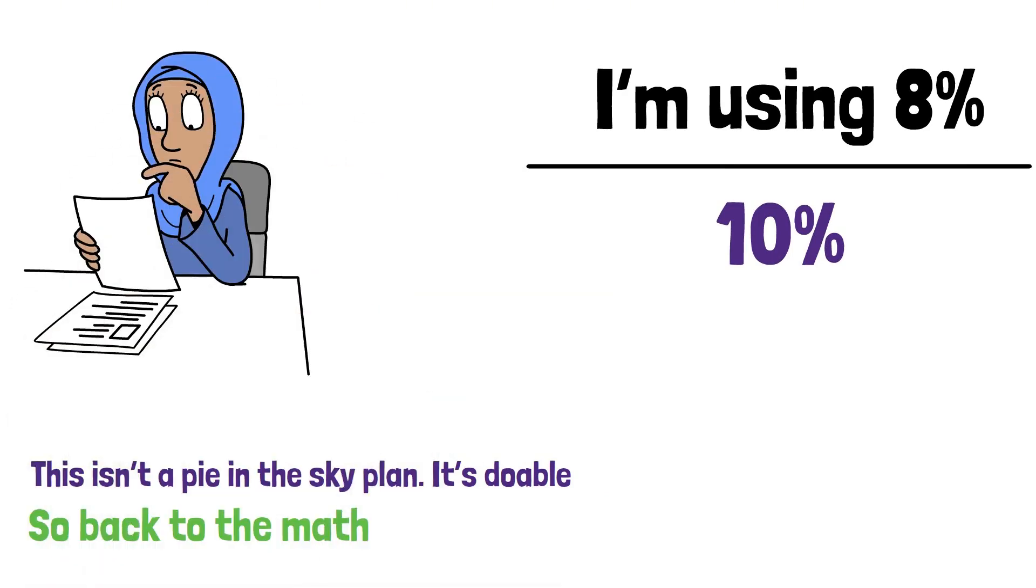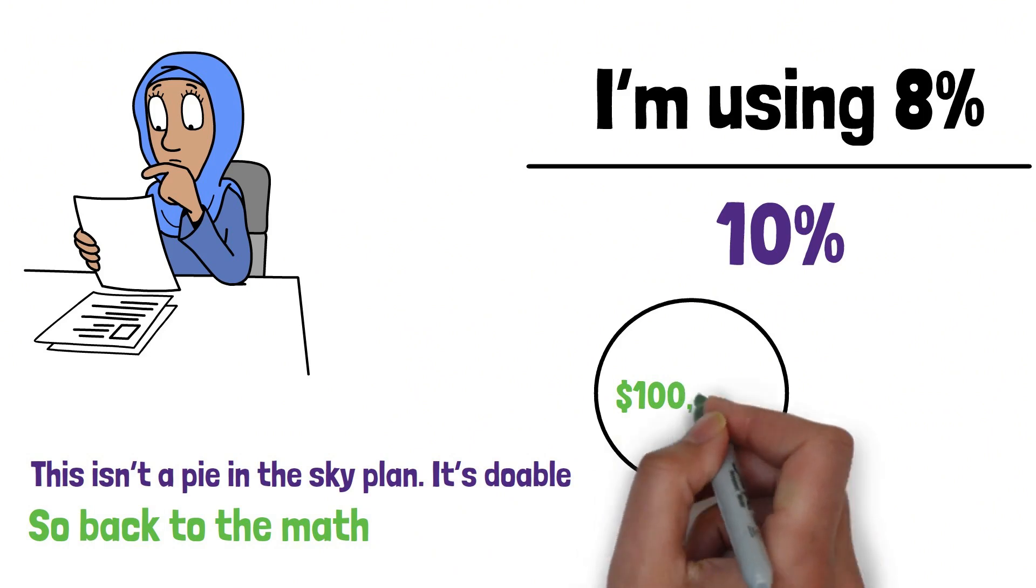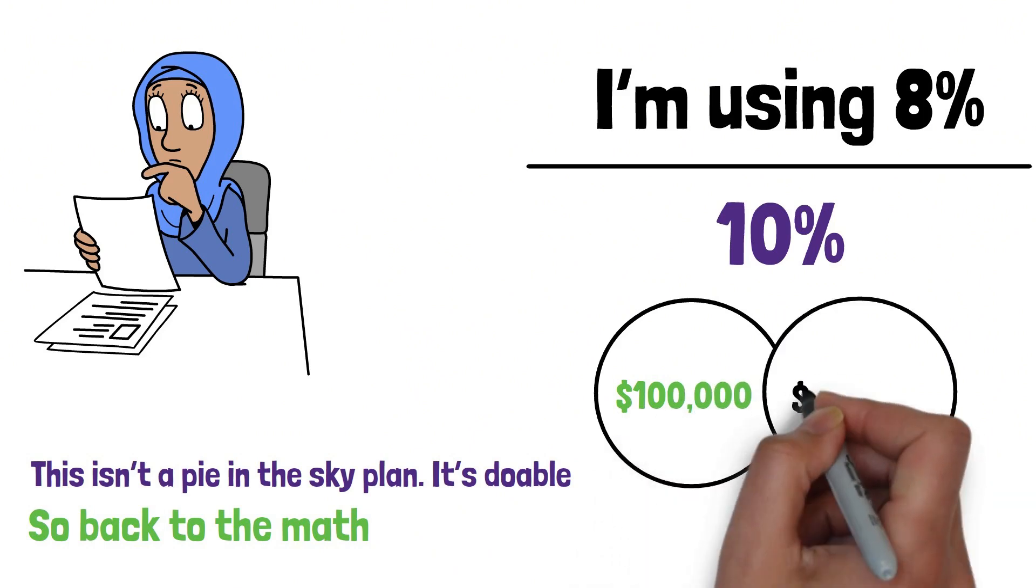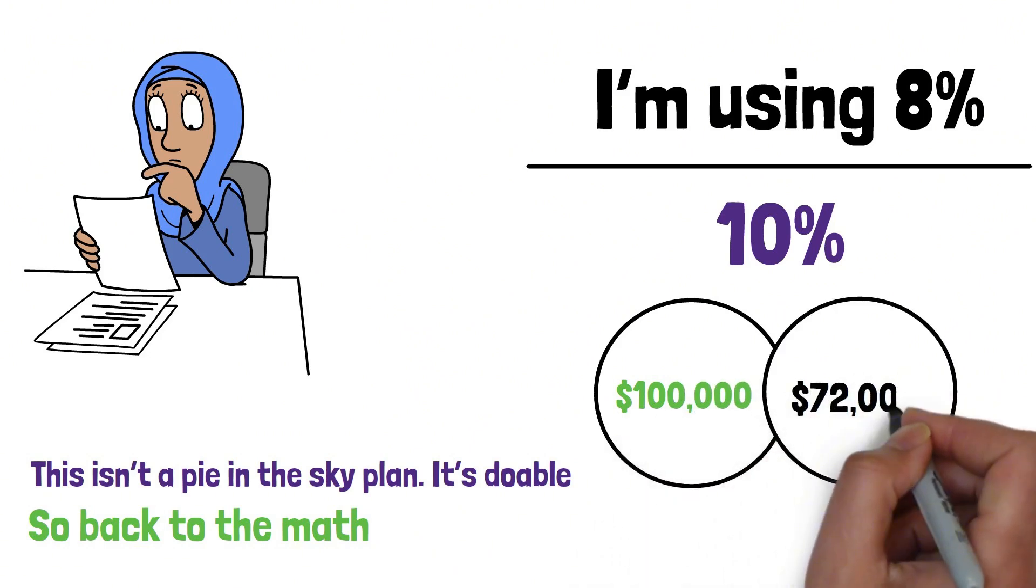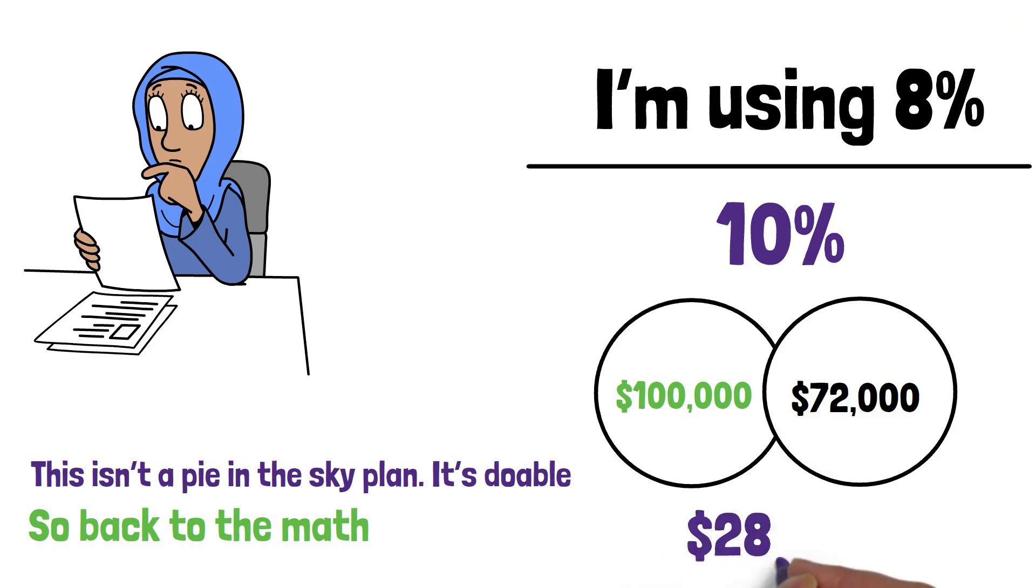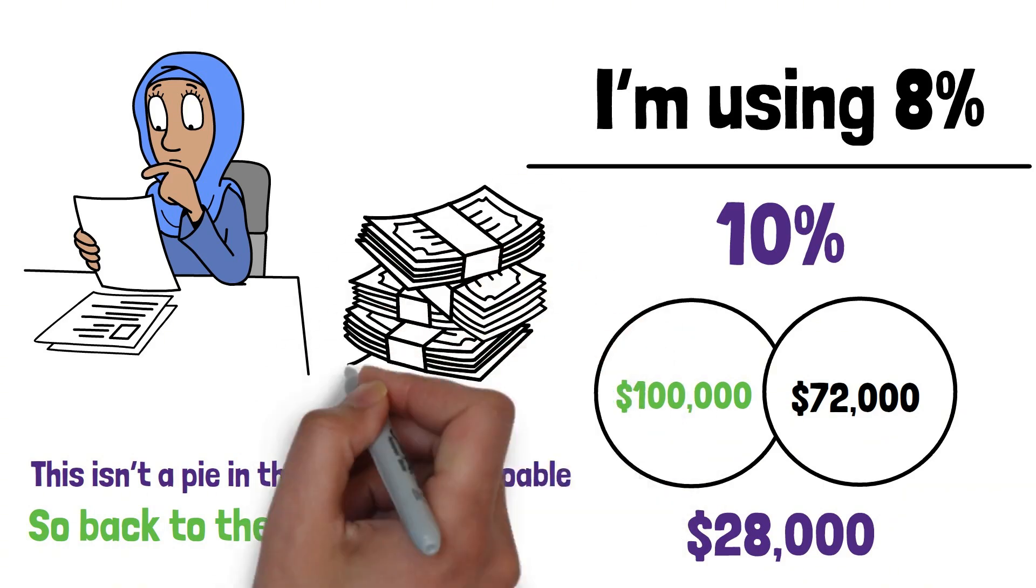It takes around 12 years to reach your first $100,000. In those 12 years, you'll contribute $72,000 of your own money, and compounding will contribute roughly $28,000. You're doing most of the heavy lifting. Your money hasn't had enough time to help you yet.